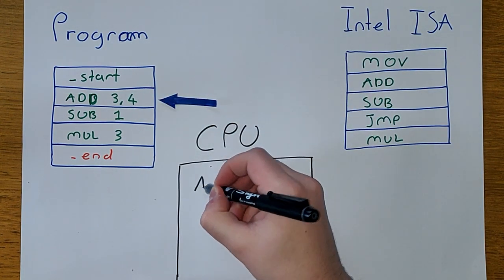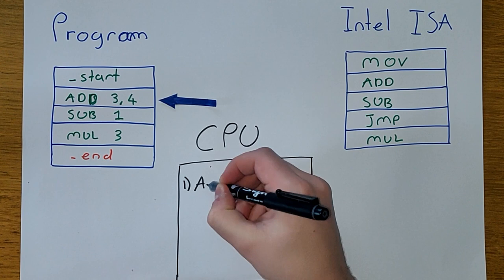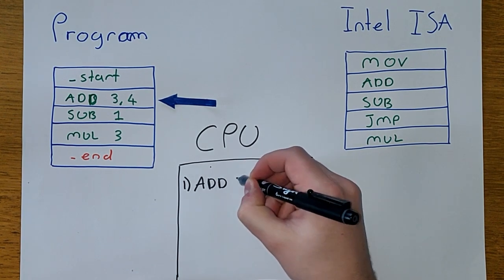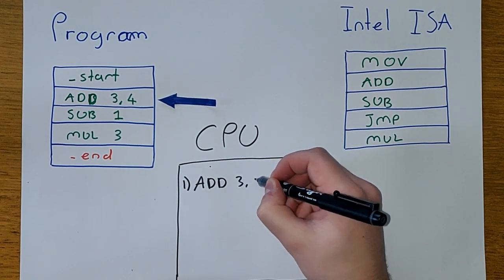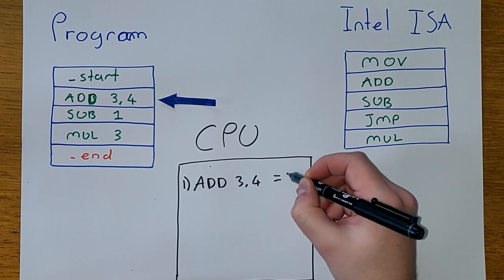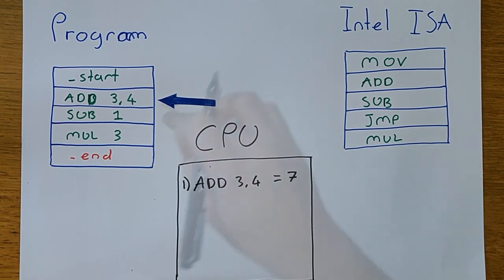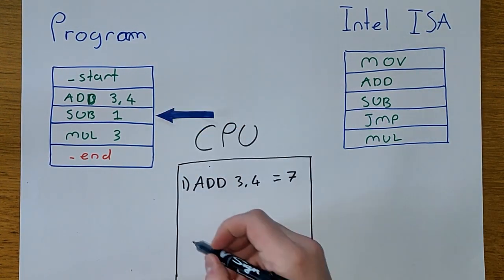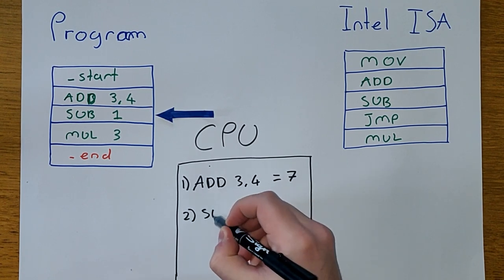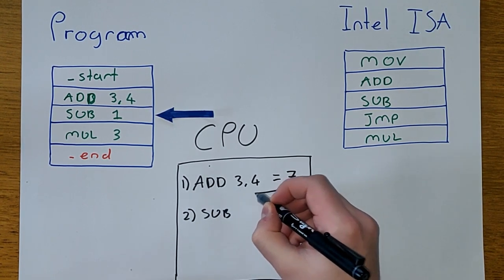We want to add three and four together, so we use the add instructions and say three and four to indicate we want to add these numbers together. The result that gets returned is seven. The processor finishes and moves on to the next instruction. The next instruction is sub one from that result.